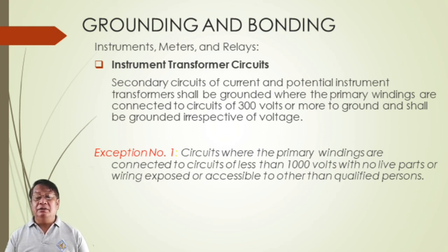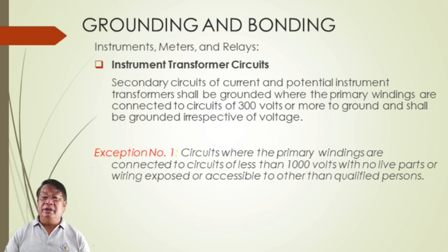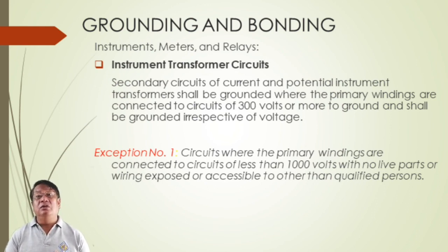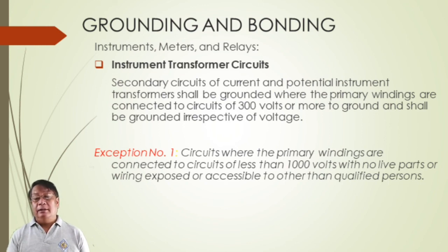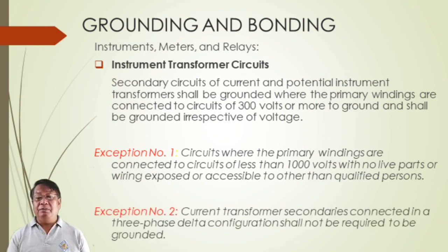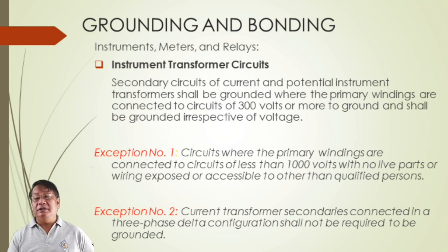Instrument meters and instrument transformer circuits shall be grounded where the primary windings are connected to circuits of 300 volts or more to ground. Exception one: circuits where primary windings are connected to circuits of less than 1,000 volts with no live parts or wiring exposed. Exception two: current transformer secondaries connected in a three-phase delta configuration shall not be required to be grounded.